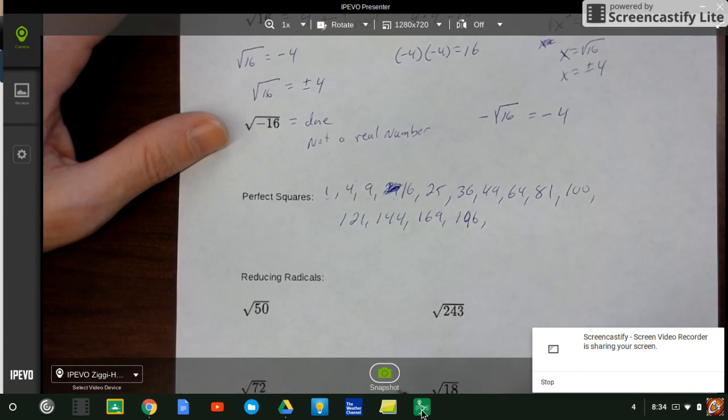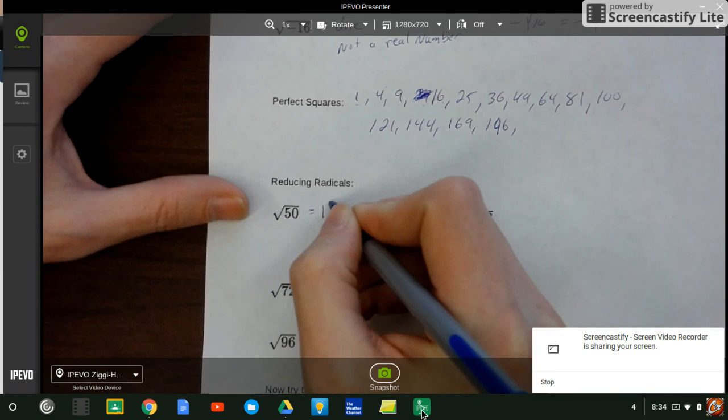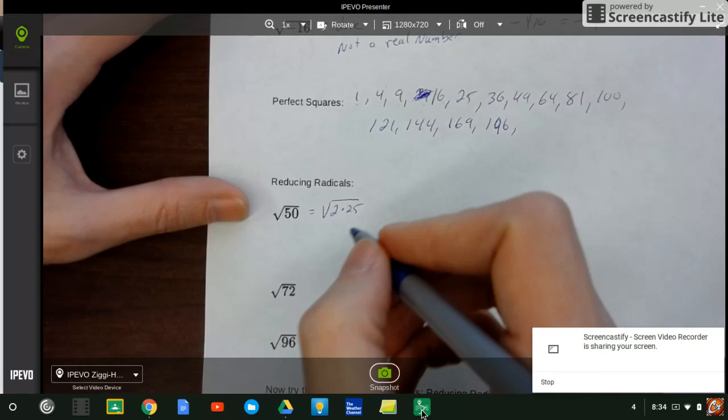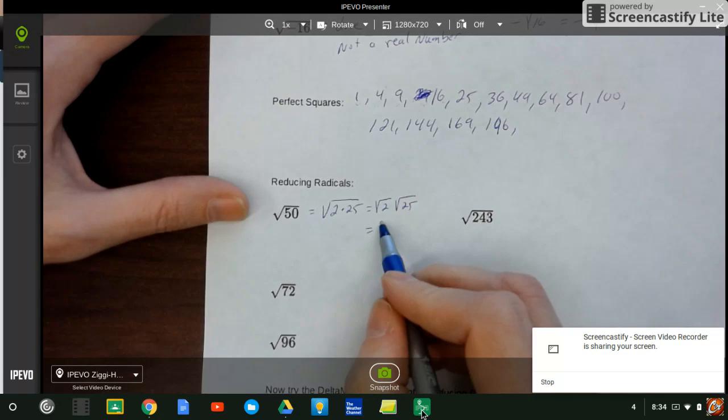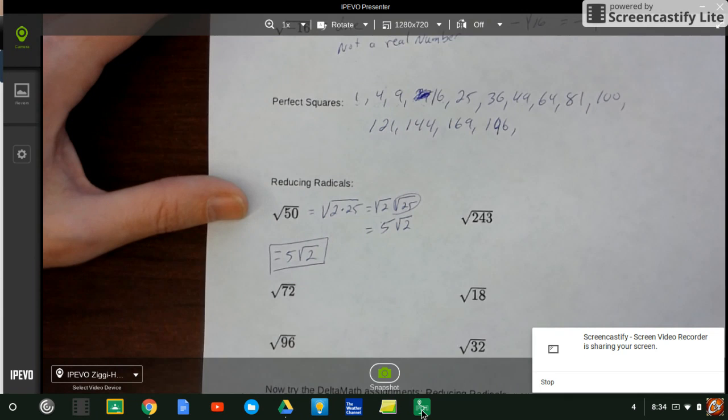What we want to talk about is how do we reduce radicals. Square root of 50, for example, there is no square root of 50. But I do know 50 can be made by going 2 times 25. So then I could break that up as square root of 2, square root of 25. Now, I don't know what the square root of 2 is, so it stays. But the square root of 25 is 5, so this ends up being 5 radical 2.